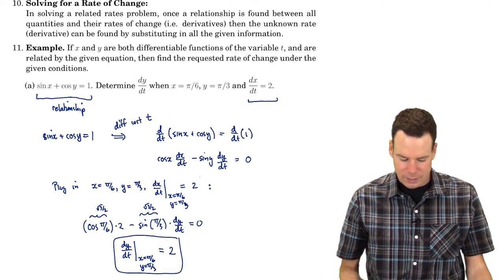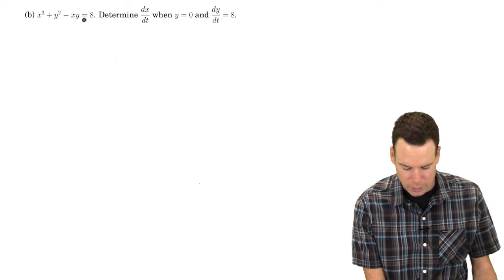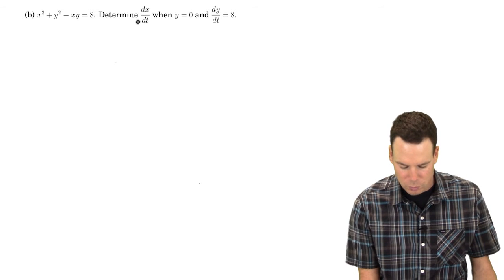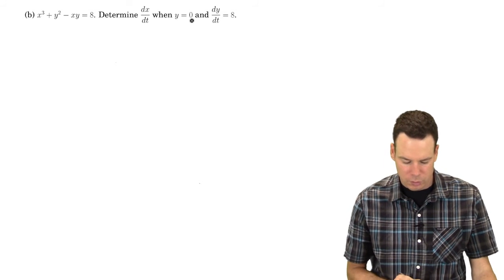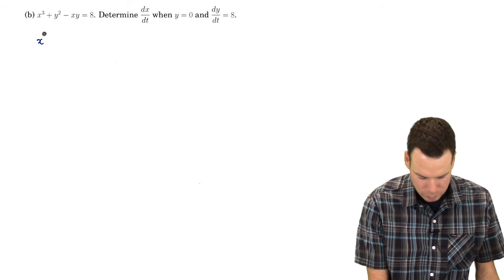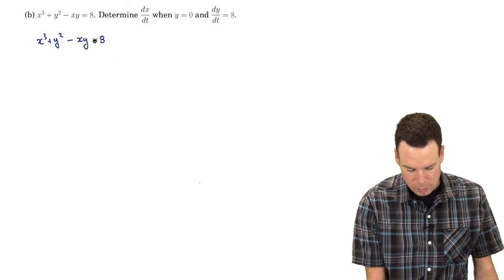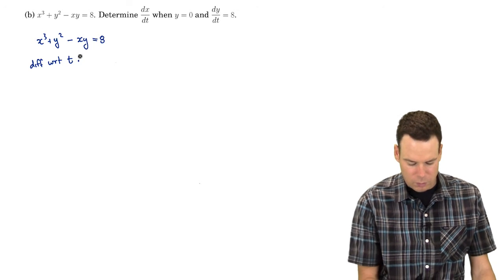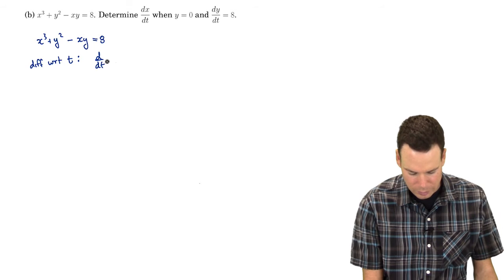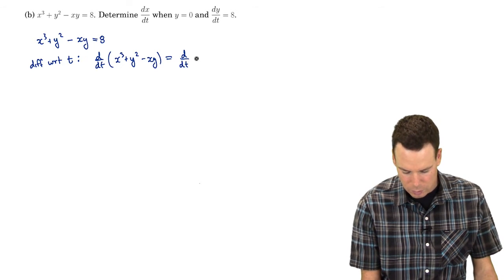Let's look at one last example for solving for an unknown rate. Here we have a relationship between x and y, and we want to determine the derivative of x with respect to t when we know the derivative of y with respect to t at a particular moment when y equals zero. We start with our relationship and differentiate with respect to t, finding a relationship between the derivatives: the derivative of x³ + y² − xy equals the derivative of 8.